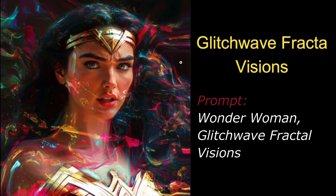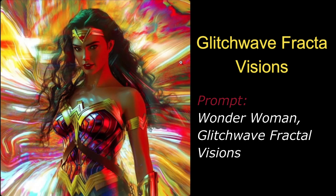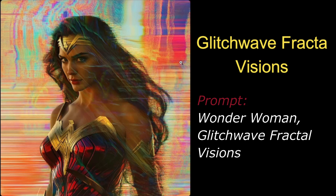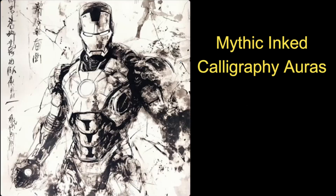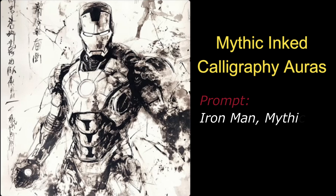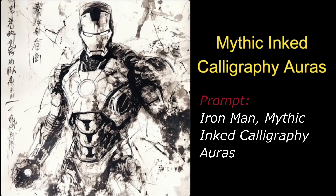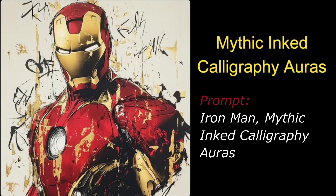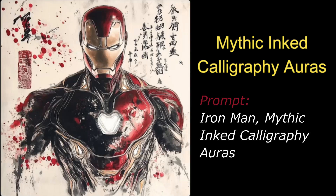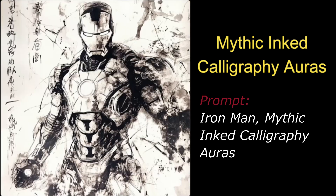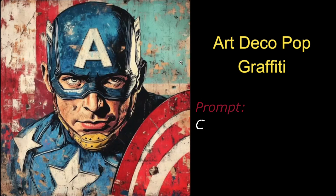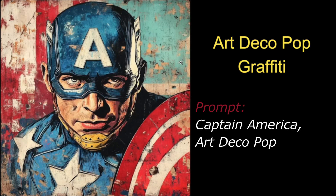The glitch wave fractal visions results with Wonder Woman turned out really amazing. Then we have mythic inked calligraphy auras with Iron Man as the subject. The results look really good — it basically looks like a vector design, animated and clean. All of them look really great.